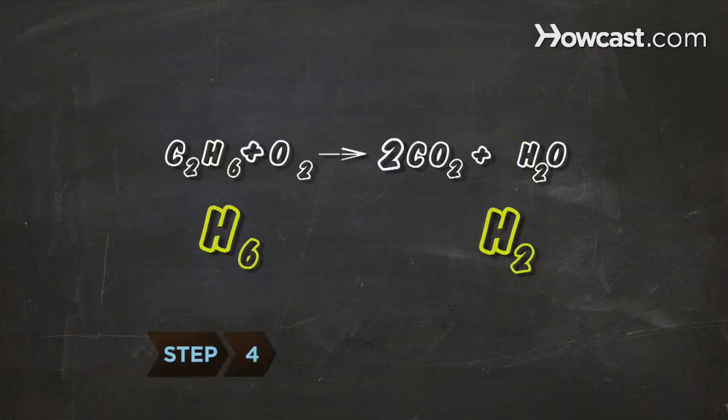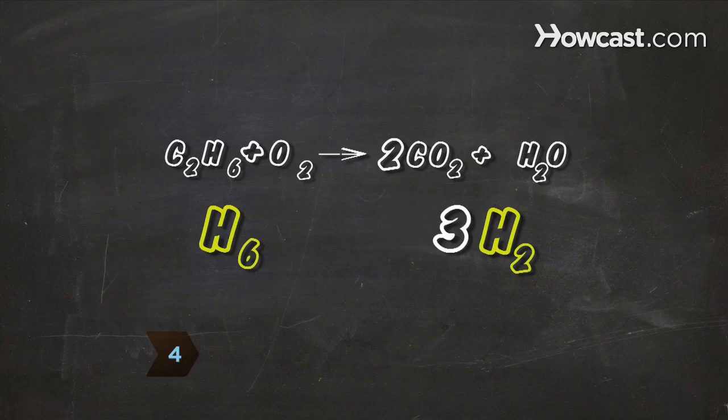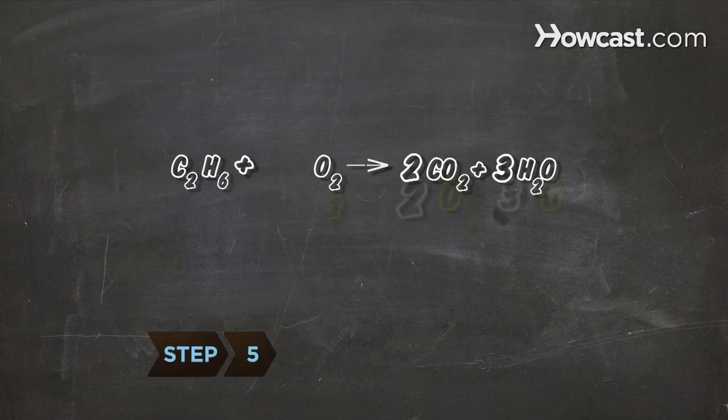Step 4: Select another element or compound that is not balanced and balance it. Step 5: Repeat this process until the equation is completely balanced.